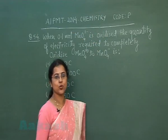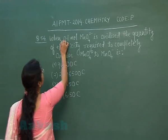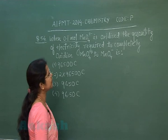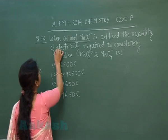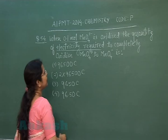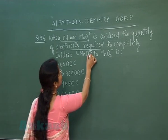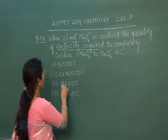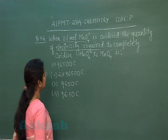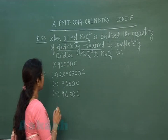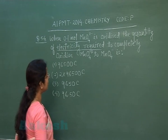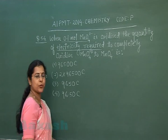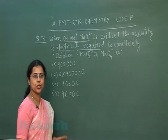Our next question is question number 54. When 0.1 mole of MnO₄²⁻ is oxidized, the quantity of electricity required to completely oxidize MnO₄²⁻ to MnO₄⁻ is? The options are: 96500 coulombs, 2 × 96500 coulombs, 9650 coulombs, and 96.50 coulombs.